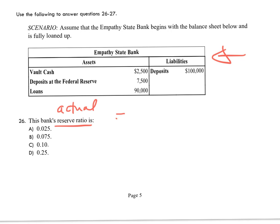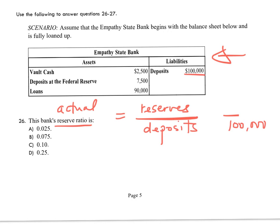The actual reserve ratio is the reserves divided by the total deposits. We have total deposits — the amount being placed into the bank by depositors — and we also have what the bank is doing with those deposits: $2,500 in the vault and $7,500 deposited at the Federal Reserve, which is not being loaned out. Adding $2,500 plus $7,500 gives $10,000 in total reserves, divided by $100,000, giving us a 10% reserve ratio.